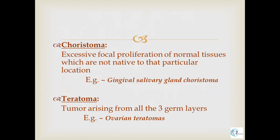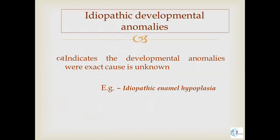The next term is teratoma. Teratoma is a tumor which arises from all three germ layers — that is mesoderm, endoderm, and ectoderm. For example, ovarian teratomas. Some diseases may be idiopathic, in which the exact cause is not known; they fall under the category of idiopathic developmental anomalies.